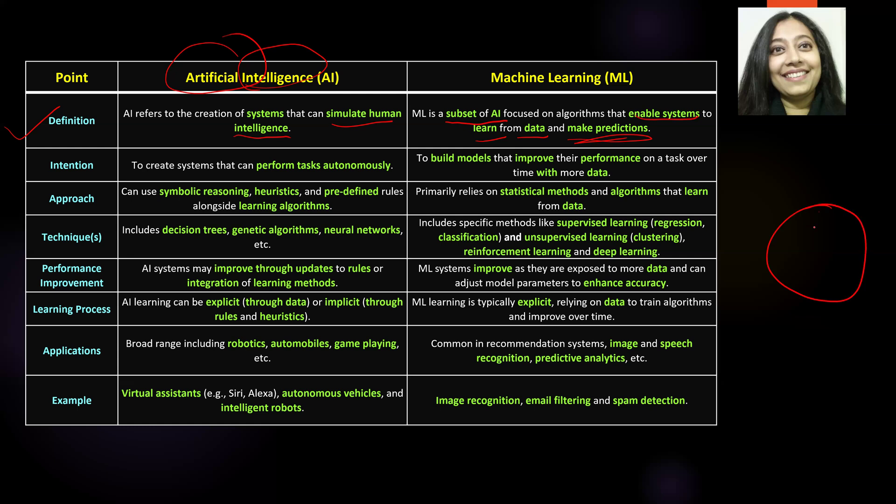Let me draw this out. If this larger circle is AI, then this smaller circle will be ML. So essentially, everything that is ML is AI, but AI has far more than just ML. AI is a superset and ML is a subset. You can answer the question by saying AI is a superset and ML is a subset — that alone could be one of the differentiating factors, part of the definition, or just otherwise. Please remember that ML is a subset of AI that focuses on developing systems that learn from data and make predictions.